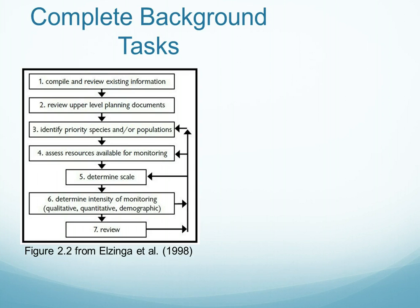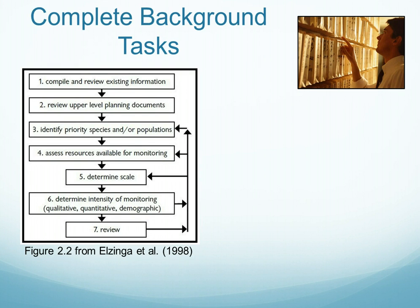The first is compiling and reviewing existing information. This includes finding previous plans, any maps, any type of inventories that are known and history about the site, as well as any information that is known about the population and species of interest.